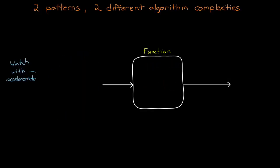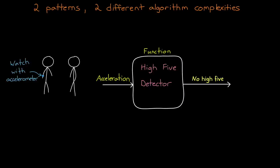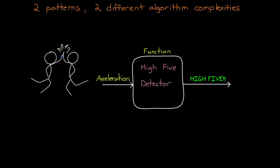But now let's look at a case where the pattern we're looking for is more abstract. Perhaps we want to use the accelerometer to determine when the user high fives someone. In this case, the input into our function is still acceleration, the exact same data as before, but the output is a flag that is set when a high five pattern is detected. The function that does this classification is decidedly more complex than a simple low pass filter because the pattern it's looking for is more complex.